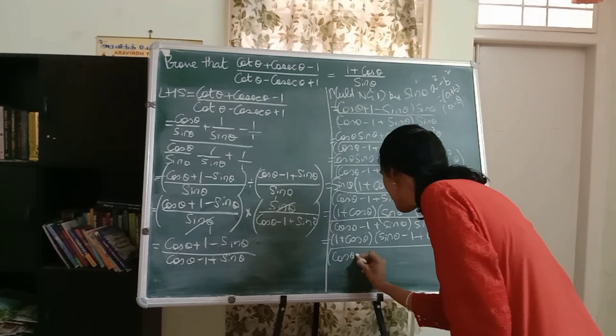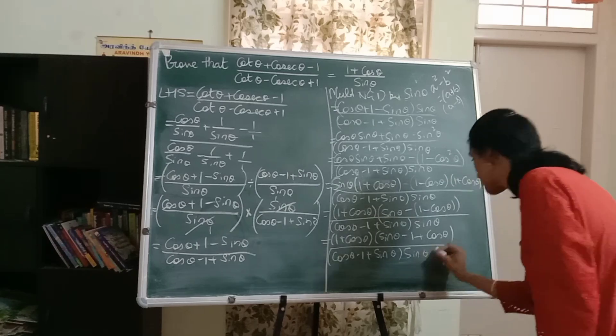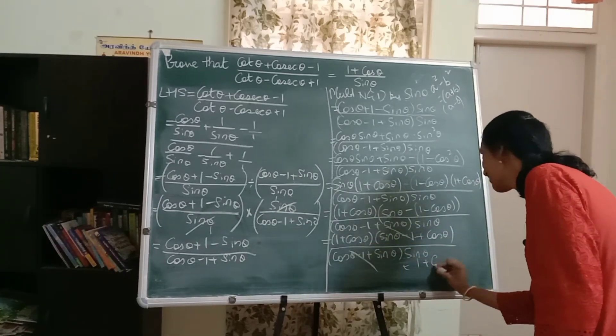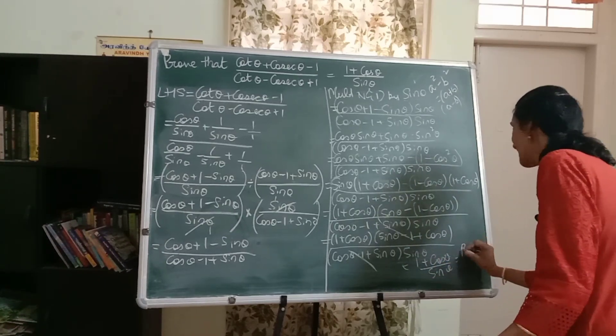Amazing. So I can very nicely cancel these two terms, which means I am getting one plus cos theta by sine theta, which is the RHS.